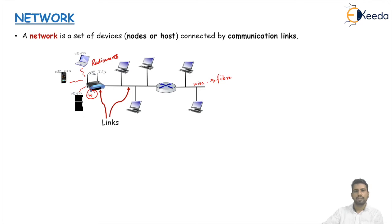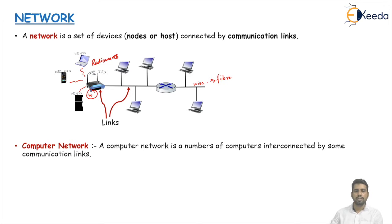Now from the network, as we see, go for the definition of computer network. A computer network is a number of computers interconnected by some communication links. Here the word is interconnected - two computers are said to be interconnected if they are able to exchange some resources, or you can say they are able to exchange information.